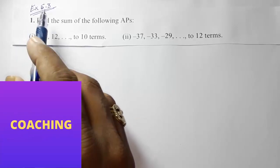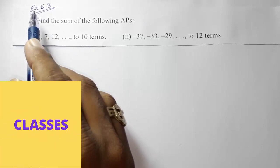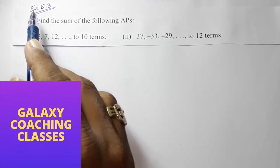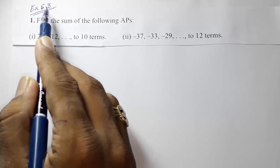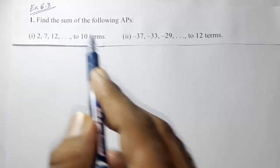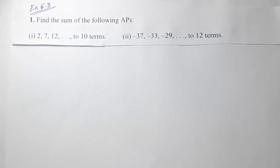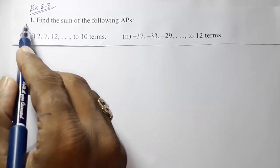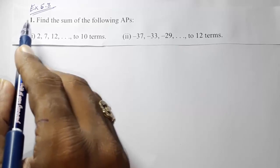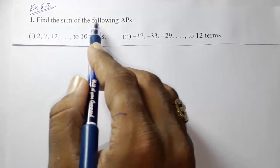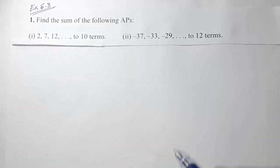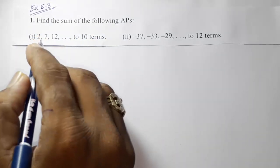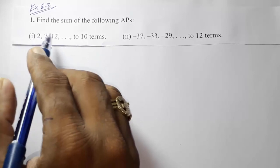Hello friends, today we are going to solve CBSE Class 10th Maths Exercise 5.3, Question 1. We have to find the sum of four APs, and I am going to solve them one by one.